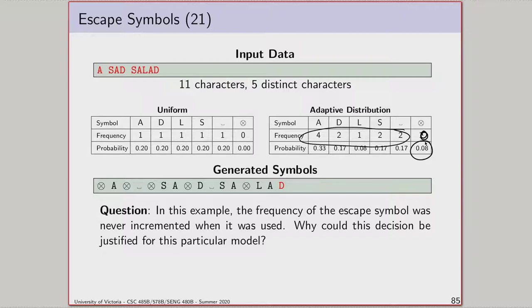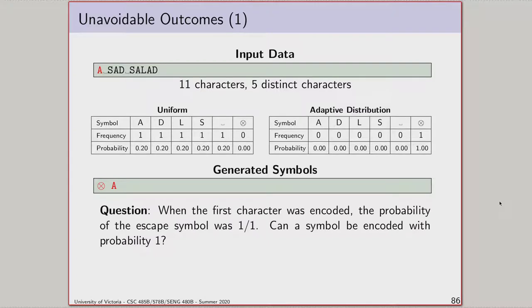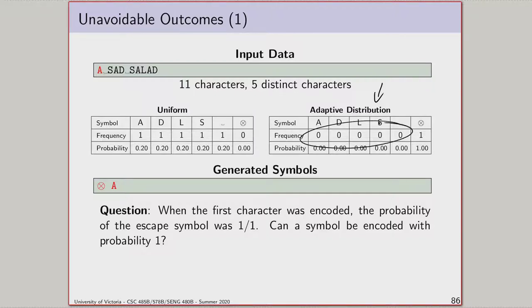Now I want to get into a more advanced model. Sending a symbol with probability 1 is a weird conceptual thing: if both compressor and decompressor know the next symbol is the escape symbol, why send anything? If you encode a symbol with probability 1, the low and high values in the coder don't change at all. You're encoding it in 0 bits because your low and high values don't change. This is a valid notational device — the decompressor already knows what the symbol is, so it costs nothing to send it.